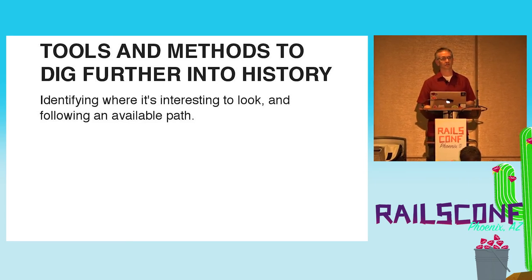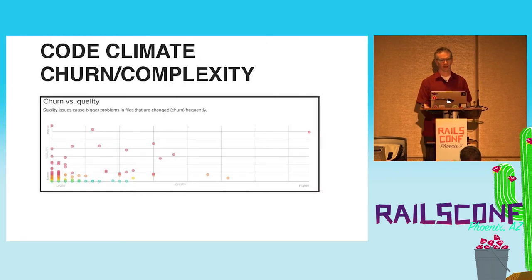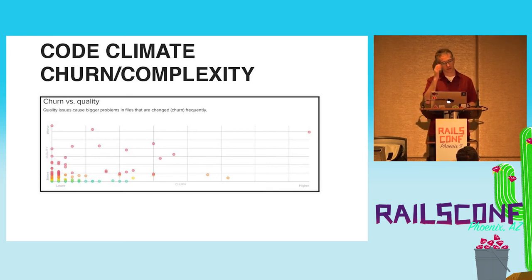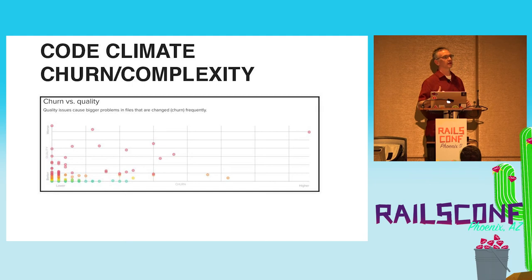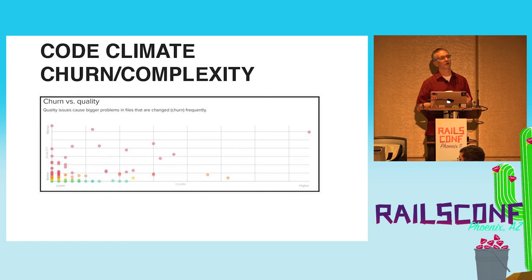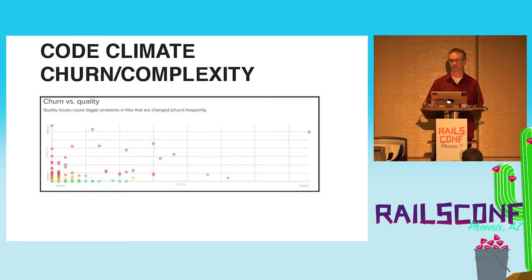Some tools and methods generally applicable to teams working with code bases older than six months or two years. Code Climate, if you use it, has a churn and complexity graph. What can be really neat is finding what you have in the upper right-hand corner — high churn and high complexity — and figuring out why you're changing it a lot and why the code quality is suspect for those changes. What can you do to pull that complexity and churn score down? Can you extract logic, break apart complexity into more easily testable things that don't have to change as much?